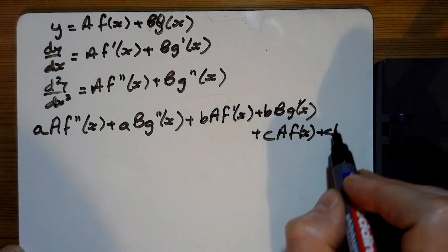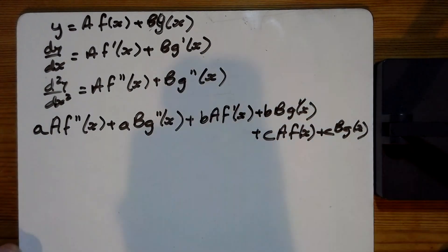And then plus c of the original, so c f of x and c b g of x. We think all of that is what it substitutes in to give.